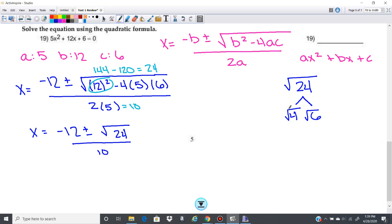The square root of 4 then is 2, so that comes out of the radical, and that becomes a 2 radical 6. So now I have x equals negative 12 plus or minus 2 radical 6 over 10.